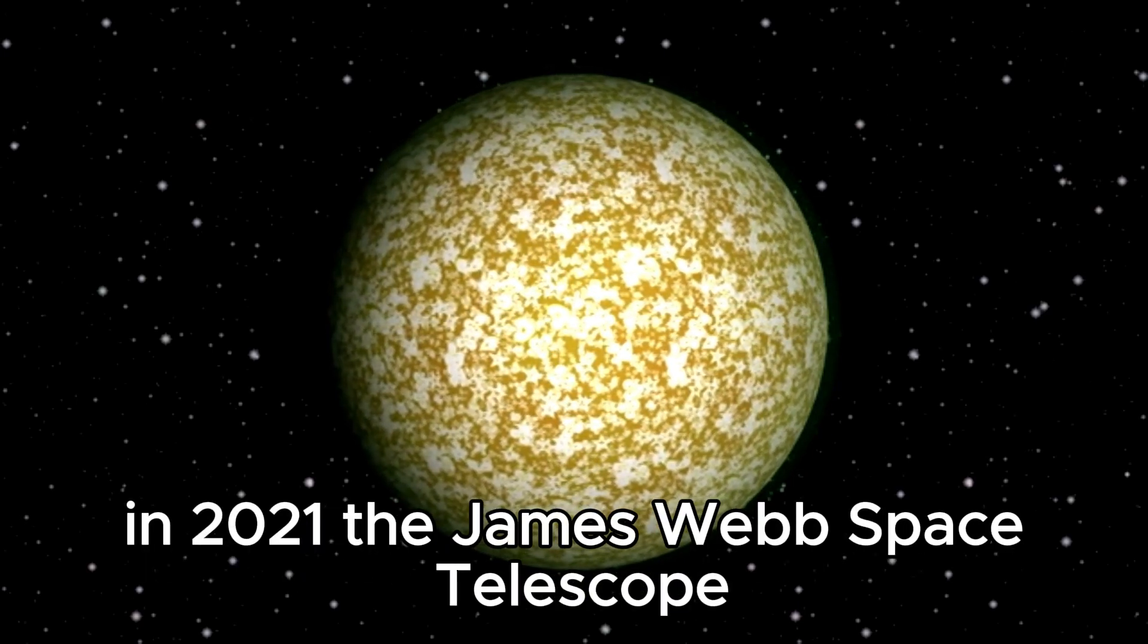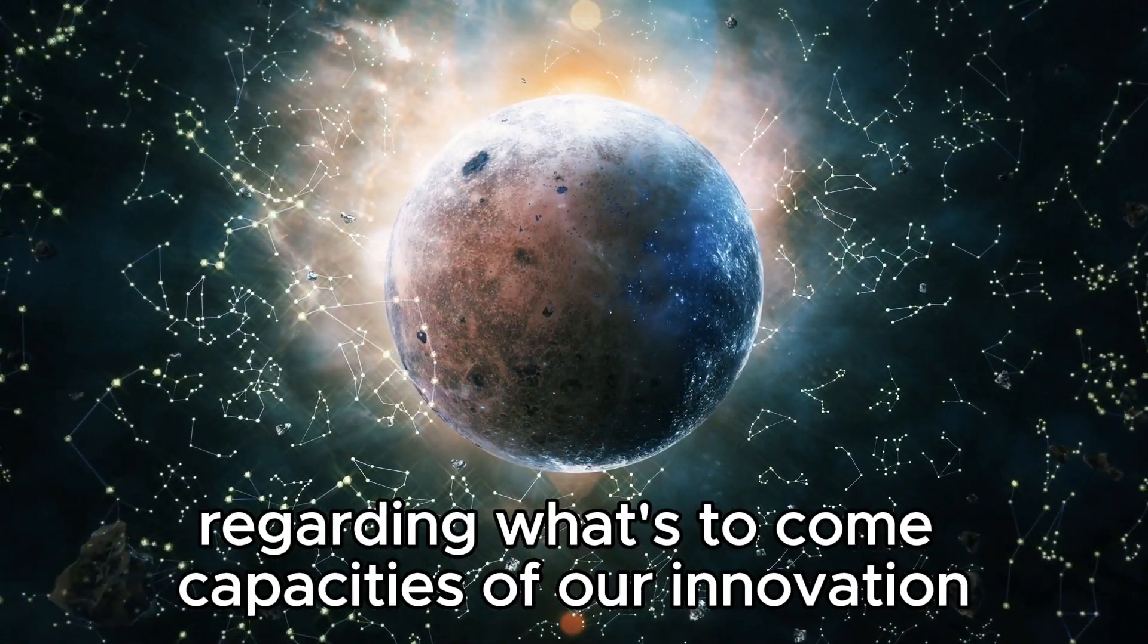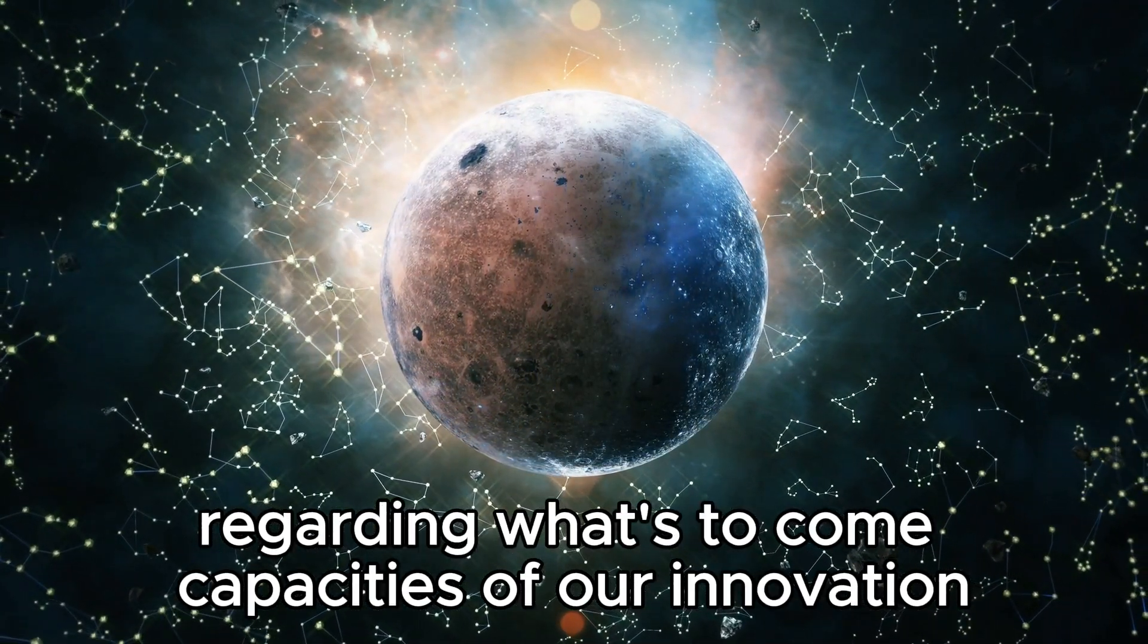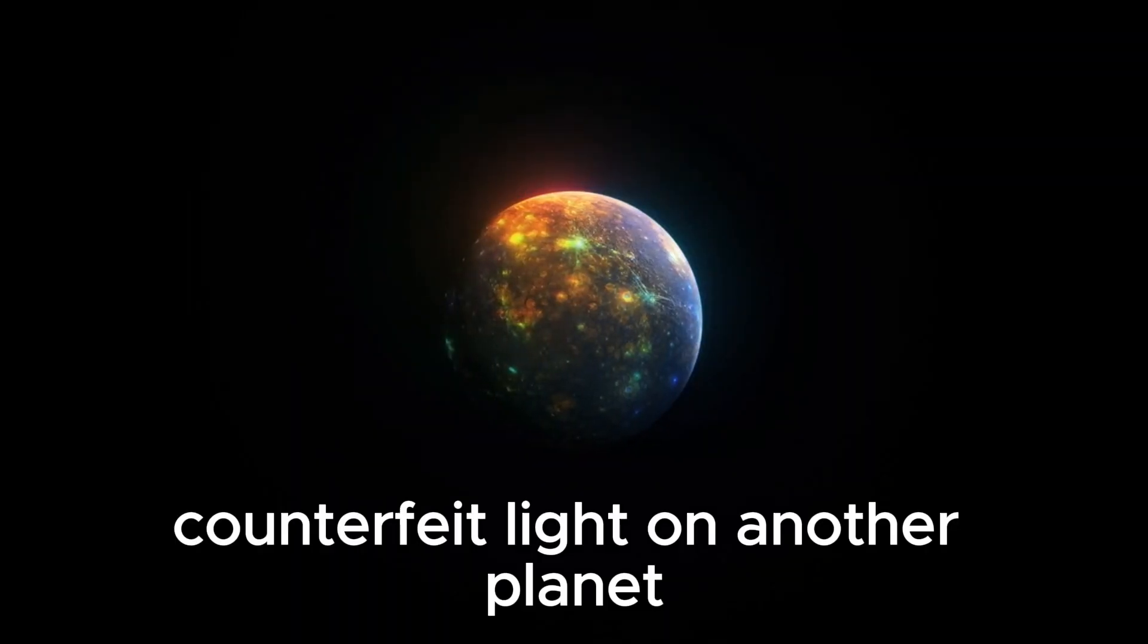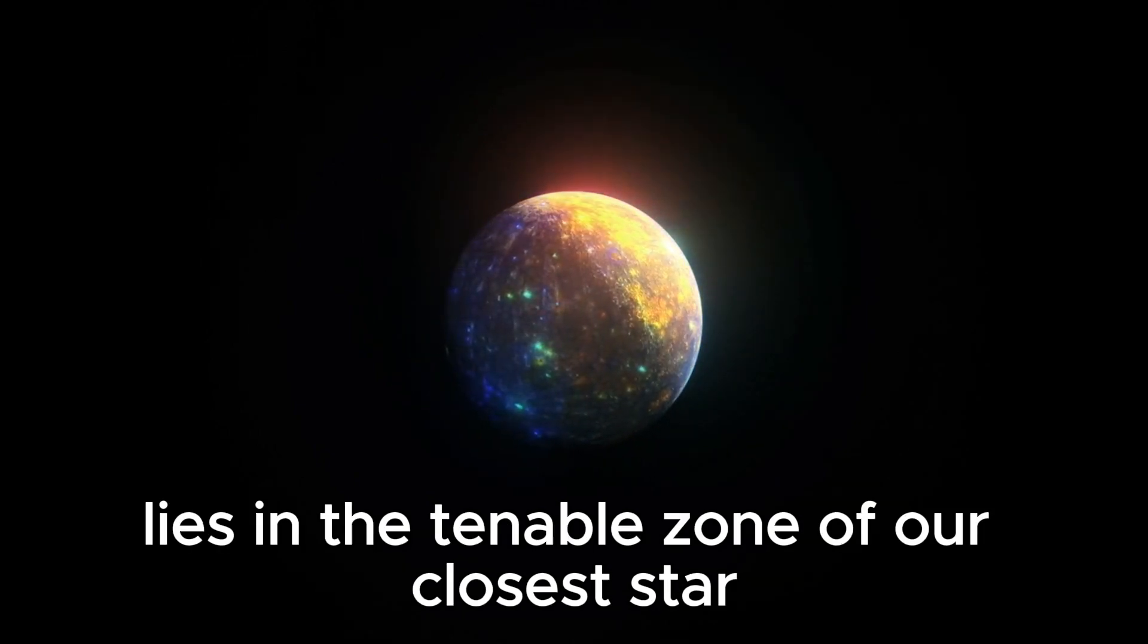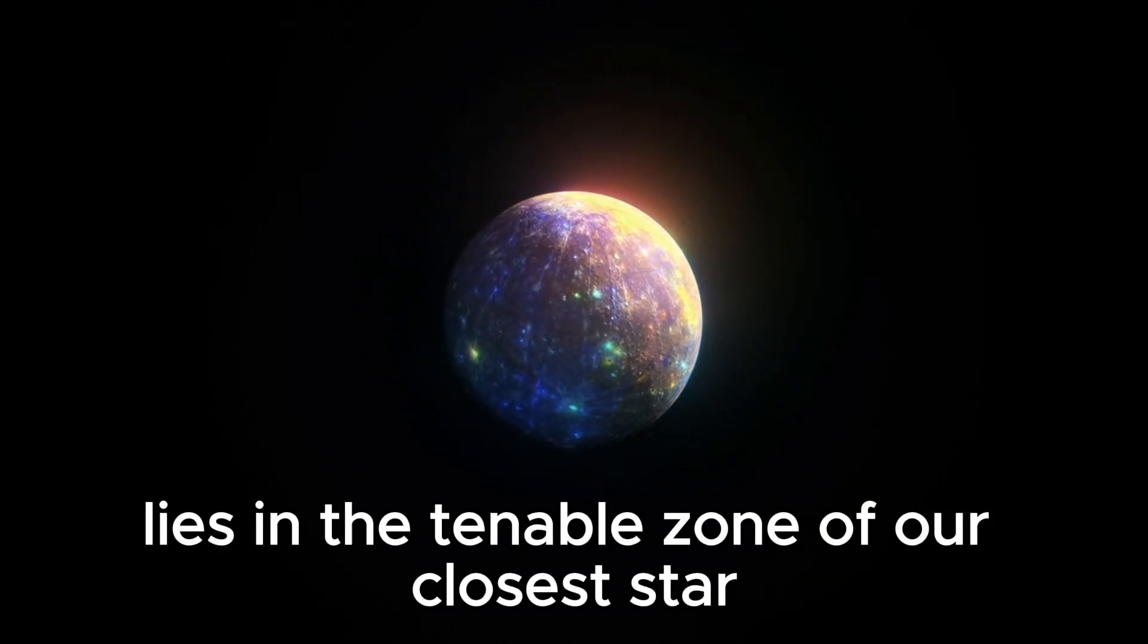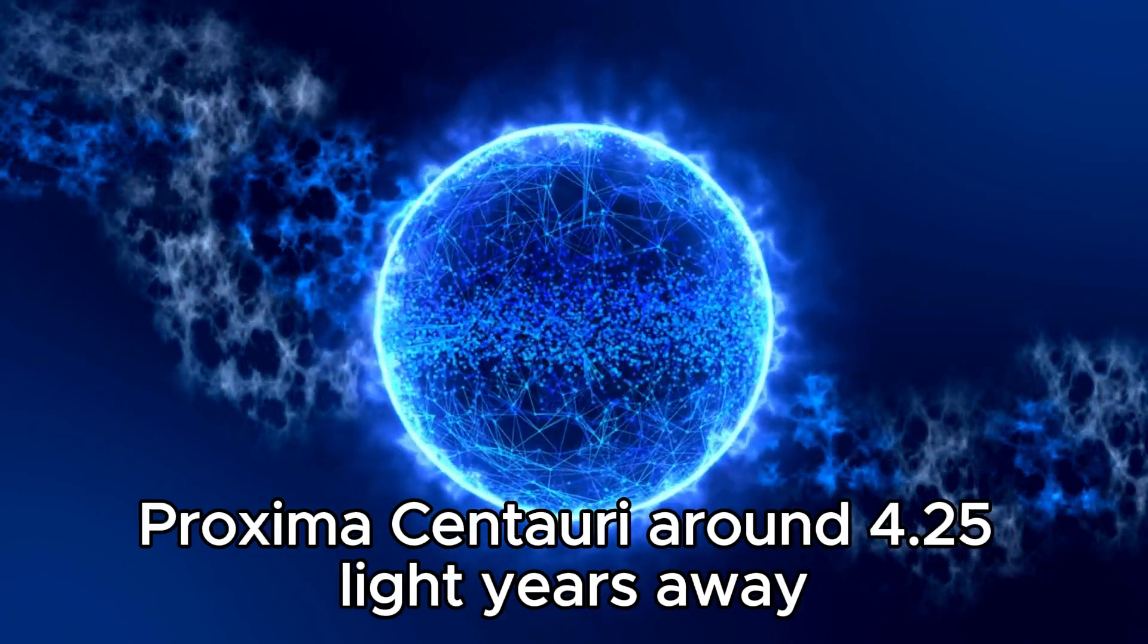In 2021, the James Webb Space Telescope presented a speculative inquiry: Could our telescope identify artificial light on another planet like Proxima b? This exoplanet, the nearest to Earth, lies in the habitable zone of our closest star, Proxima Centauri, around 4.25 light-years away.